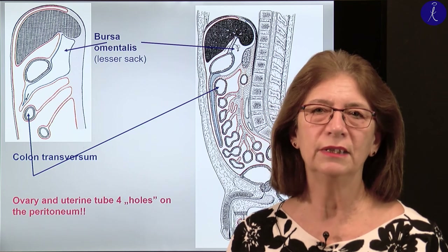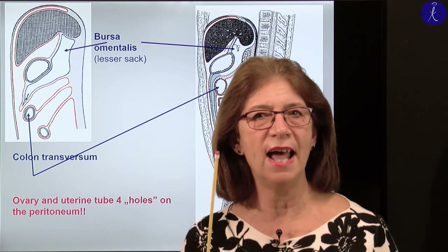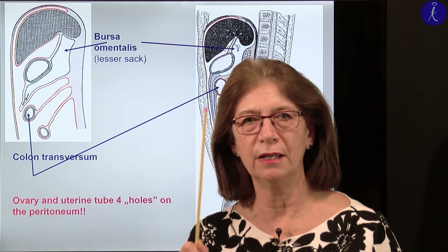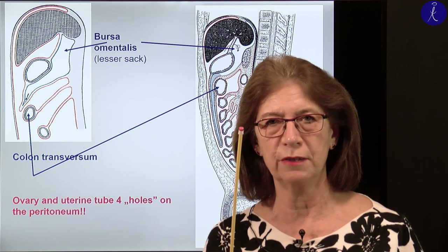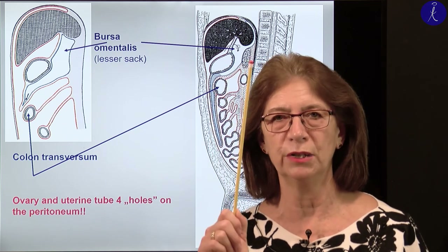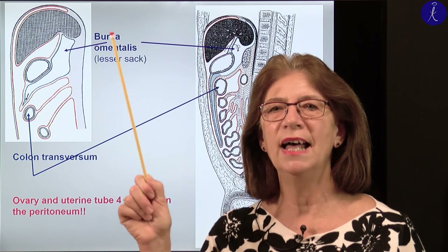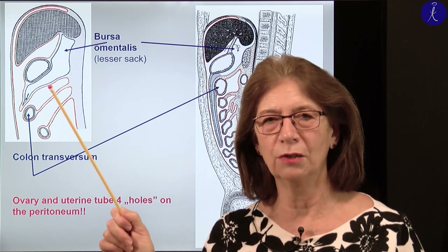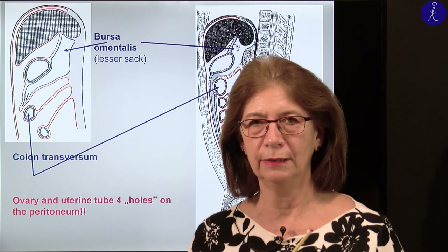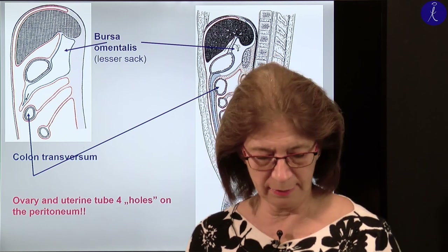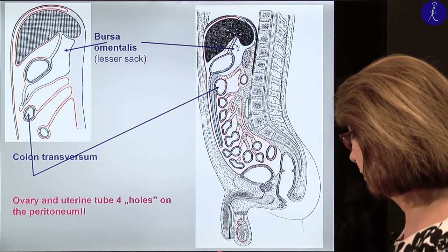I used to tell students — of course this is a joke — that if you let an ant into the vagina of a female, it could climb up through the cervix, through the cavity of the uterus, through the uterine tube, and walk around in the true peritoneal cavity. The sperm cells do the same story sometimes.